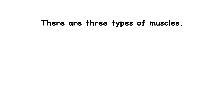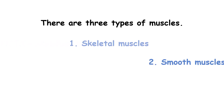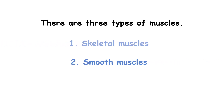There are three types of muscles: skeletal muscles, smooth muscles, and cardiac muscles. Let's learn about these one by one.